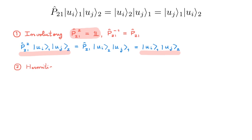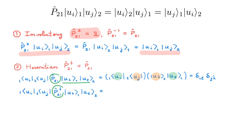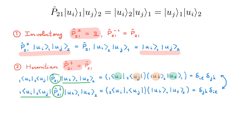The second property is that P21 is Hermitian, so that P21 dagger is equal to P21. To see this, consider the matrix element of P21 between two basis states. Acting with P21 on these basis states, we obtain the permutation, and we can calculate the scalar product by combining the states in V1 and V2 to get this result. Now consider the matrix element of the adjoint operator P21 dagger. The adjoint acts on the bra, so we obtain the permutation of the bra. We can then calculate the scalar product again. These two expressions are the same, so P21 dagger is equal to P21.